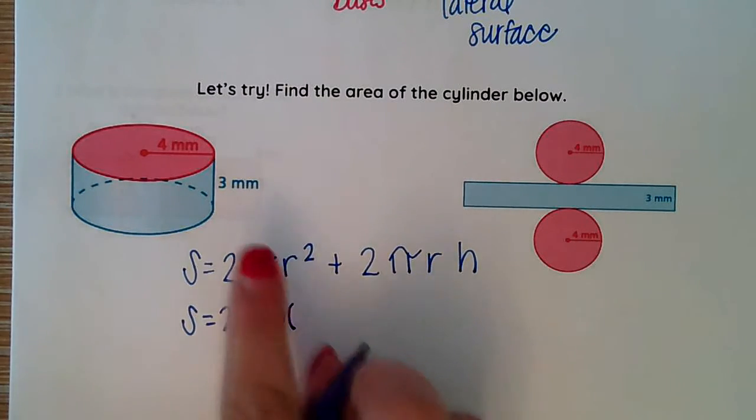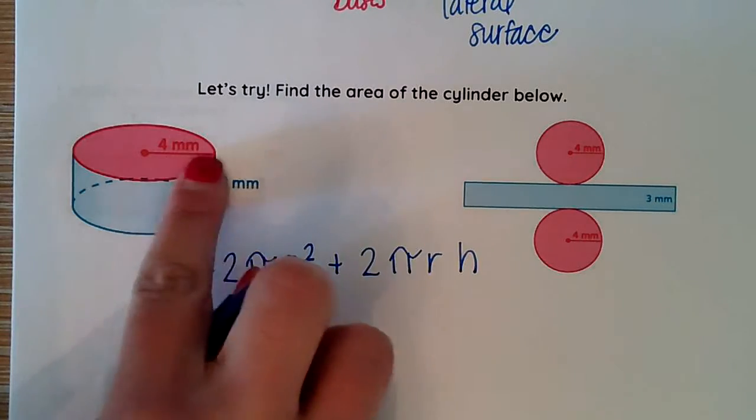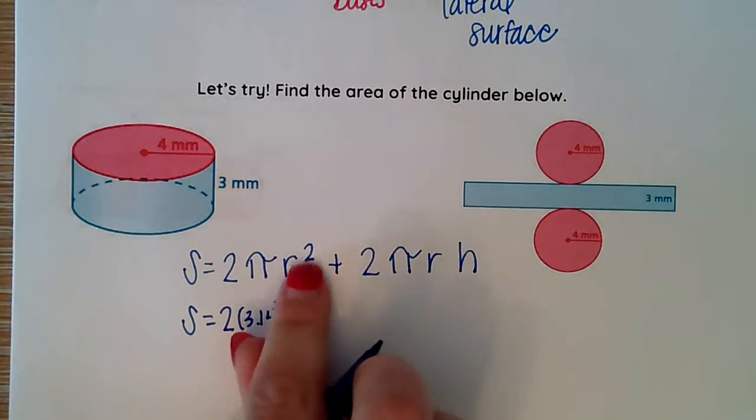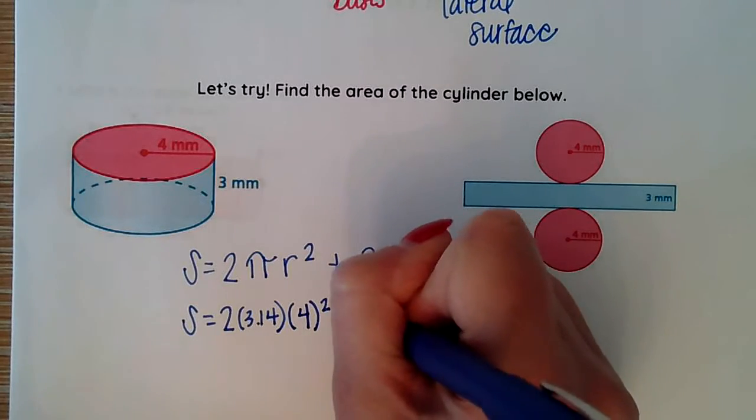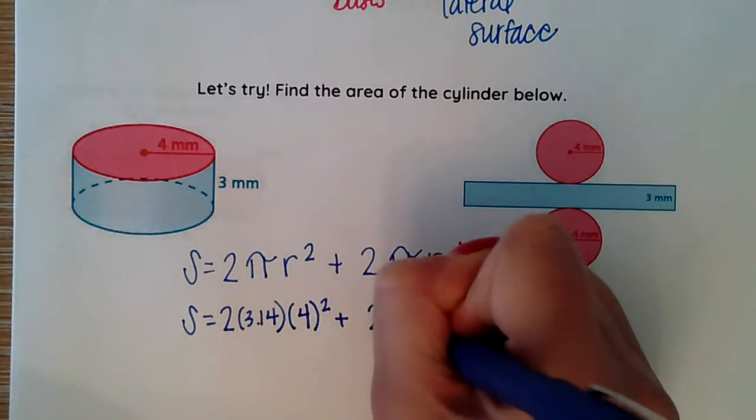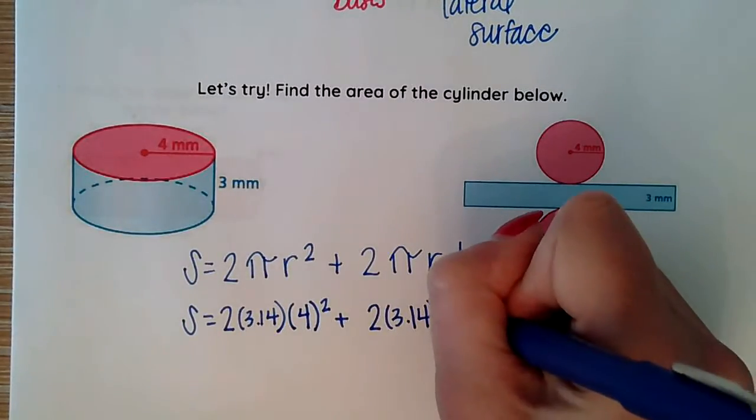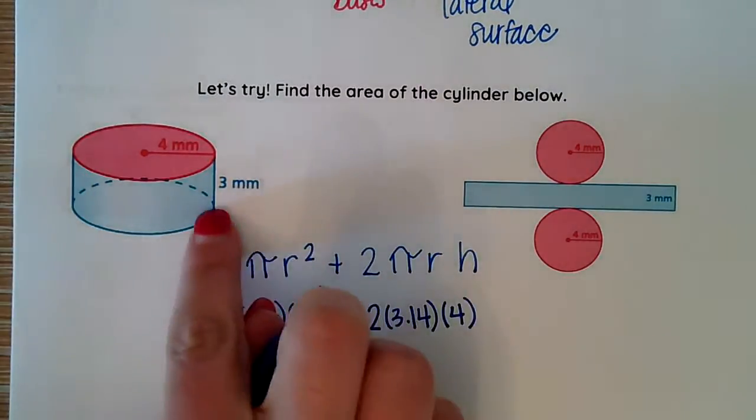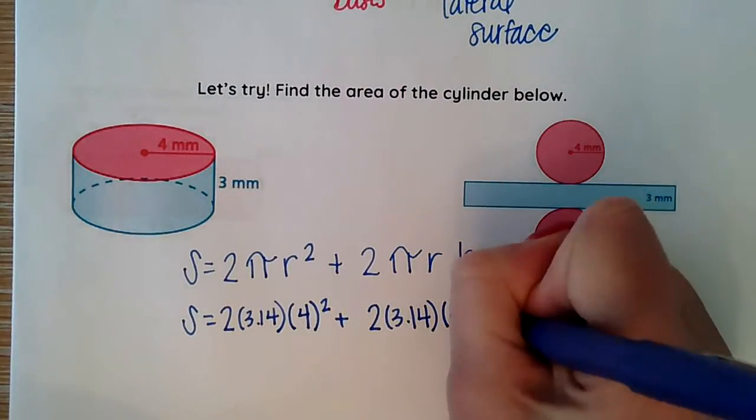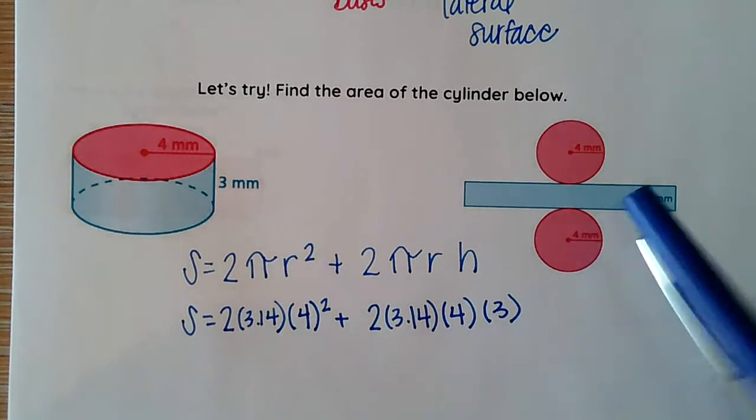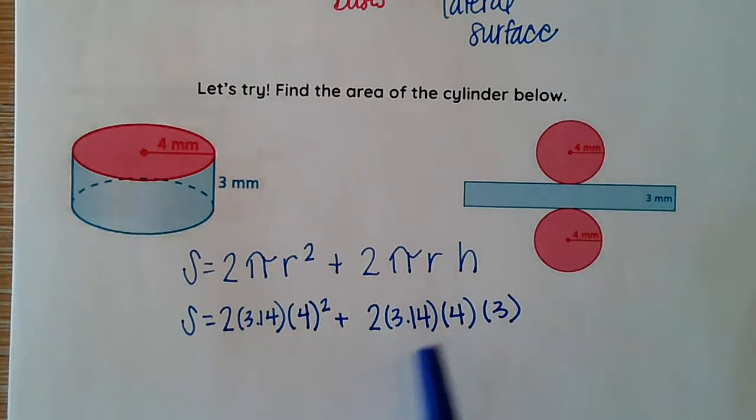Our radius here is 4 millimeters, and we're going to square that. And we add that to two, again substituting in 3.14 times r. Our radius is still 4. That doesn't change. And now we add in our height, which is 3. Take your time and make sure that you're filling in correctly. These are not the same. This one we add in the height, but we don't have the squared like we do over here.